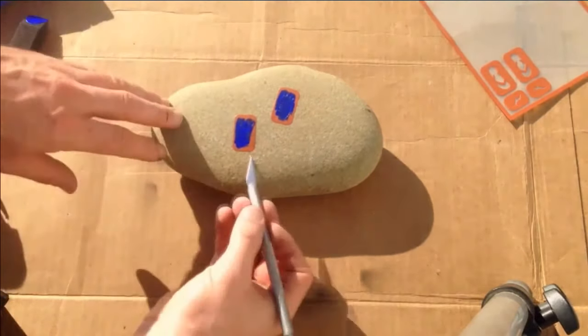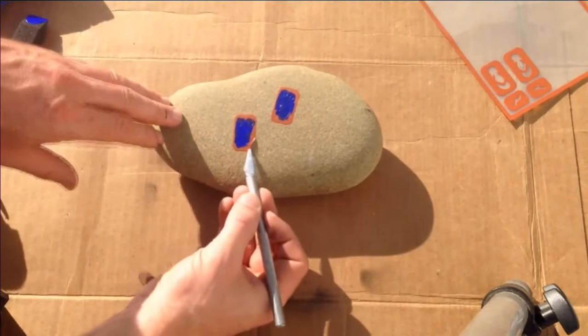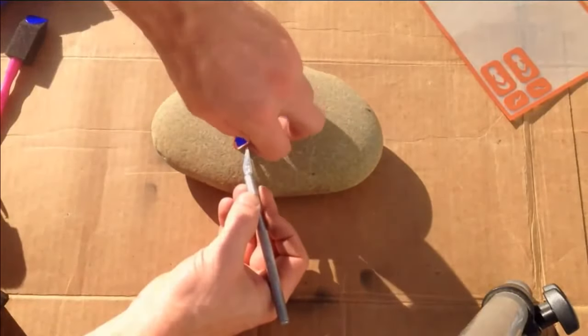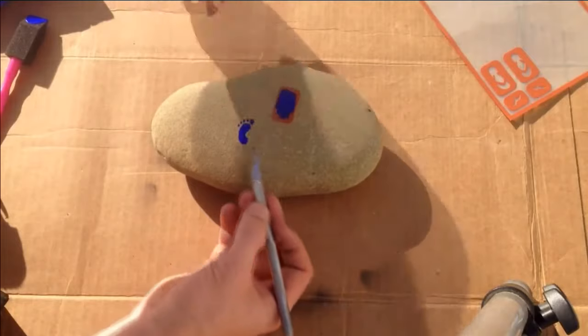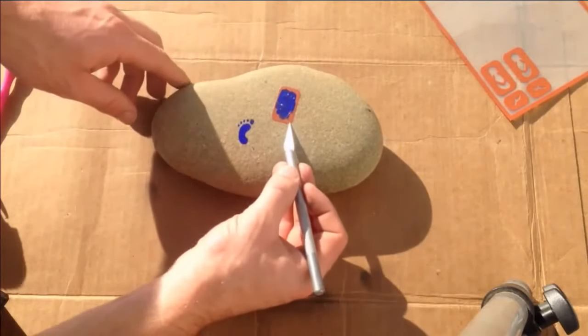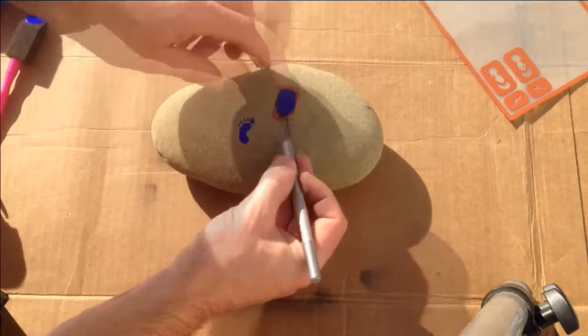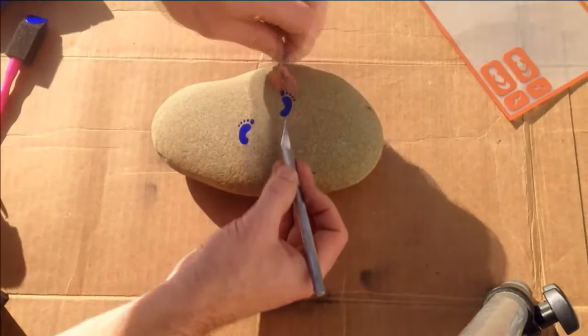Then take a razor blade and pull off the stencil. One tip: I found that spray paint doesn't really work well because it usually ends up getting under the stencil. So you want to be sure to use some kind of water-based paint.